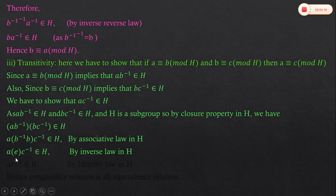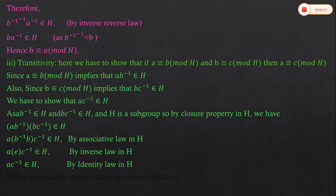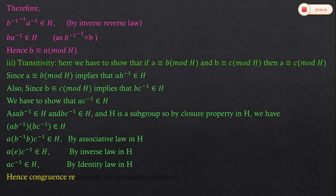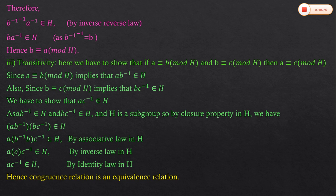By the identity law, multiplying any element by identity does not affect the product. Therefore a into c inverse belongs to H by the identity law. Hence transitivity holds. Since reflexivity, symmetry, and transitivity all hold for the congruence relation, we can conclude that the congruence relation is an equivalence relation.